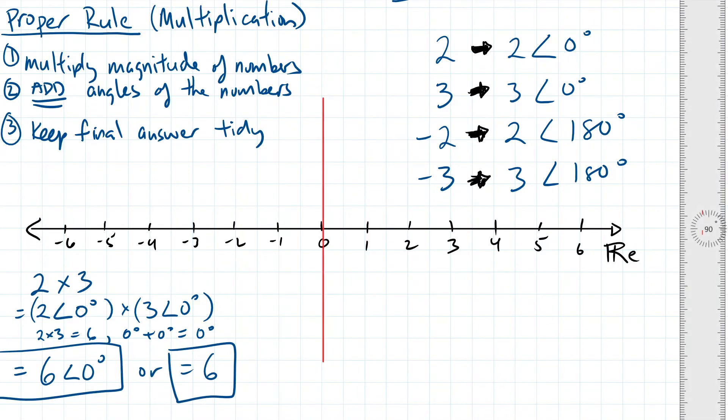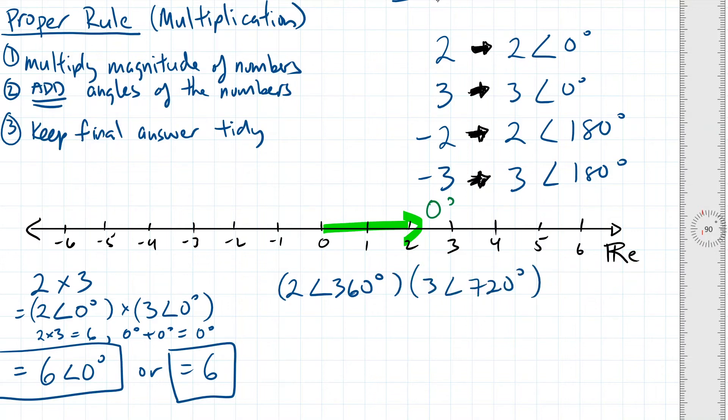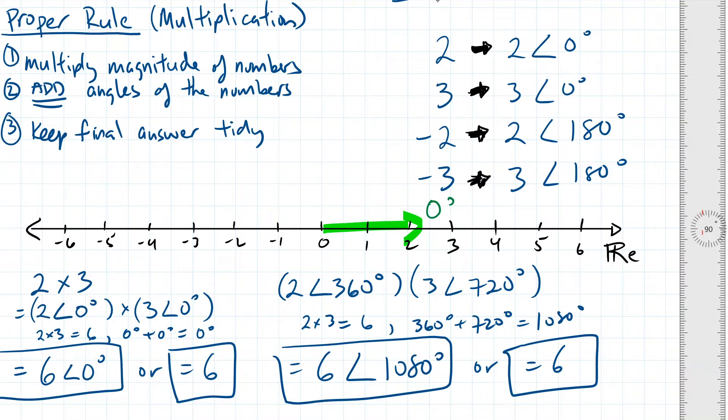Some viewers might notice that if you go full circle, you will still end up pointing in the positive direction. This is true. 0 degrees can be represented by 360 degrees, or even 720 degrees. So even if you solve the problem like this, 2 with a phase shift of 360 degrees times 3 with a phase shift of 720 degrees, well, 2 times 3 still gives you 6, and 360 plus 720 equals 1080 degrees, or 3 full rotations, which guess what? Brings you back to 0 again, so you still get the same answer of 6 with a phase shift of 0 at the end.